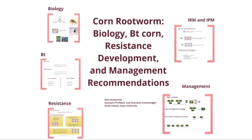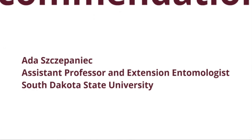This sums up the basic introduction to corn rootworm biology, BT technology, overview of resistance development, and the importance of insect resistance management, as well as using integrated approaches to managing these insects. I wanted to emphasize again how closely corn rootworm biology is tied to corn, and how easy it is to decrease their numbers by simply rotating to another crop for a year. Thanks for watching, and if you have any comments or questions, you can find my contact information on the Plant Science Department website at South Dakota State University.